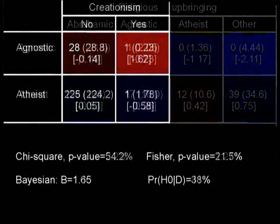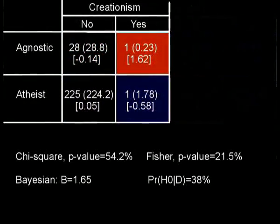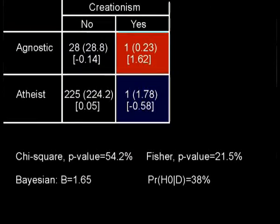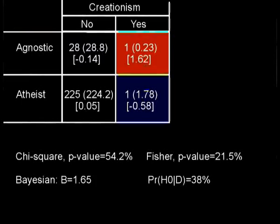Next up is creationism. You wouldn't expect any results here in the yes category for either atheists or agnostics, but here they are. There's one atheist of 226 and one agnostic of 29 that answered yes on creationism, and I really don't know why — maybe they interpreted the question as 'do you believe that creationism exists?' Or maybe they just didn't know what creationism was, or maybe they're very original. Anyway, that's quite a difference in frequency, and the Bayesian test picks up on it while the frequentist test doesn't. I'm taking that as a strength for Bayesian testing.